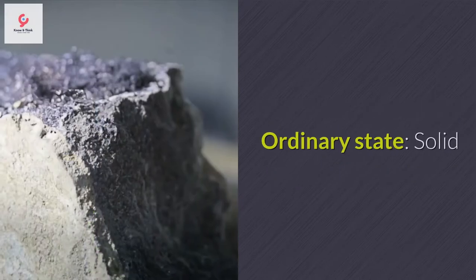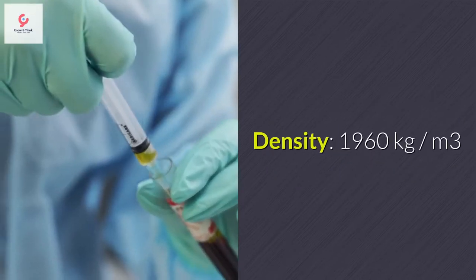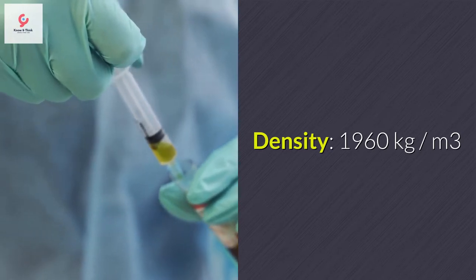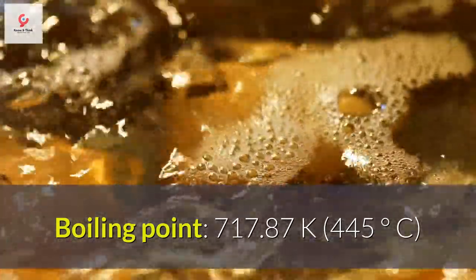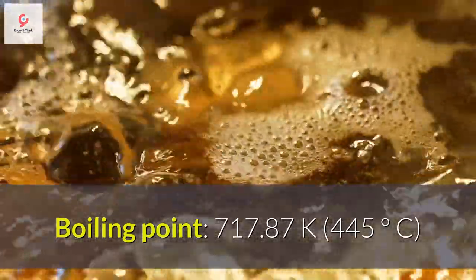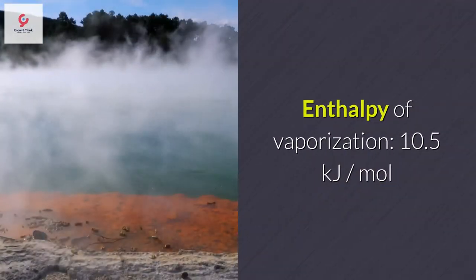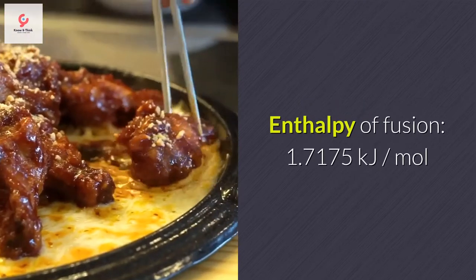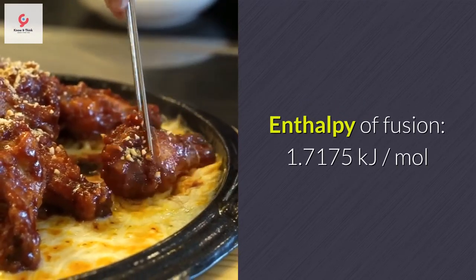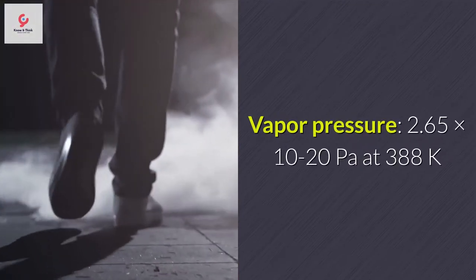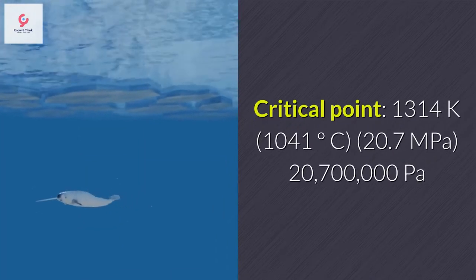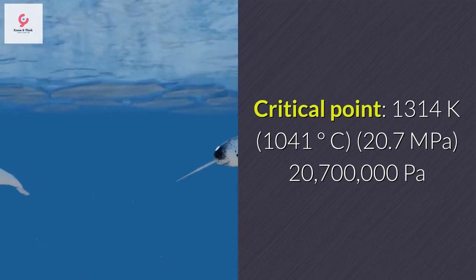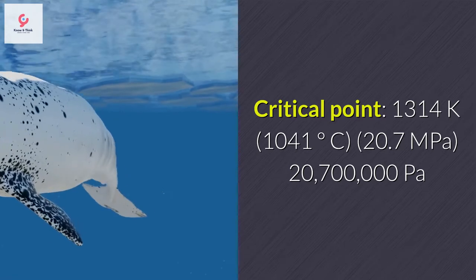Sulfur physical properties: ordinary state — solid; density 1,960 kg/m³; melting point 388.36 K (115°C); boiling point 717.87 K (445°C); enthalpy of vaporization 10.5 kJ/mol; enthalpy of fusion 1.7175 kJ/mol; vapor pressure 2.65 × 10⁻²⁰ pascals at 388 K; critical point 1,314 K (1,041°C), 20.7 megapascals (20,700,000 pascals).